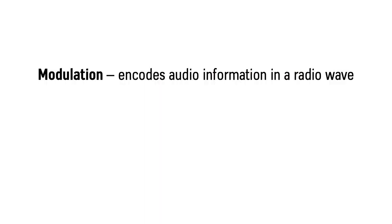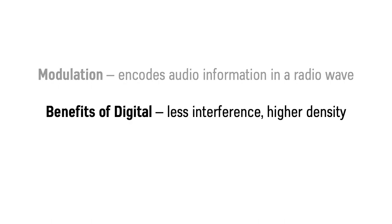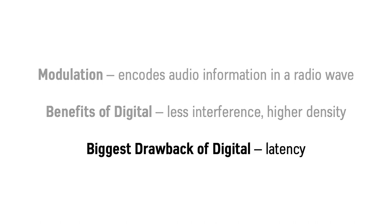First in this video we discuss modulation, which encodes audio information in a radio wave. Then we see some benefits of digital wireless including less interference and higher density. And we also look at the biggest drawback of digital wireless, which is latency.